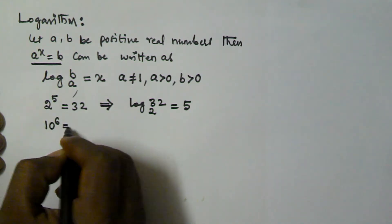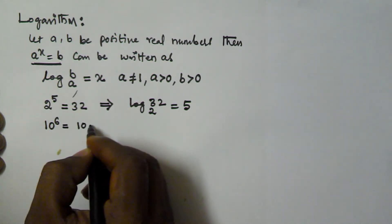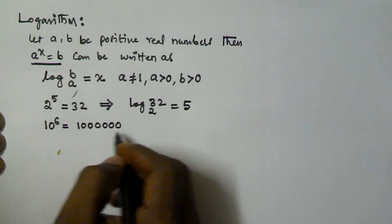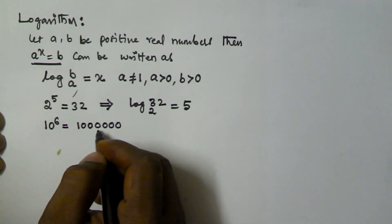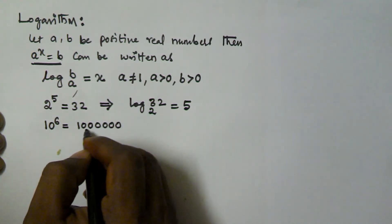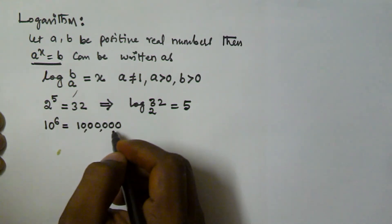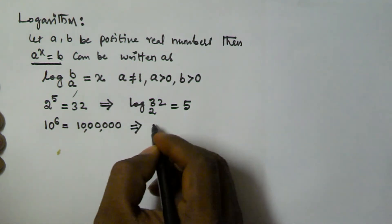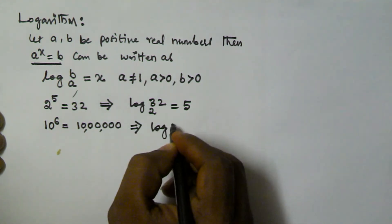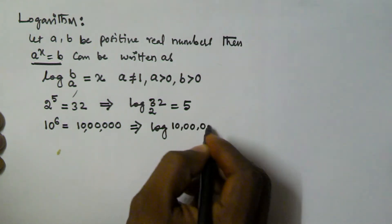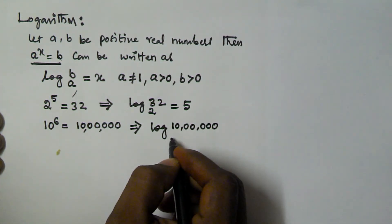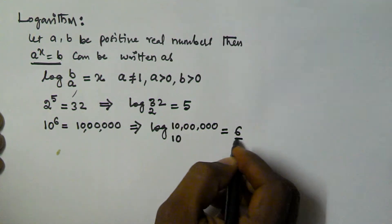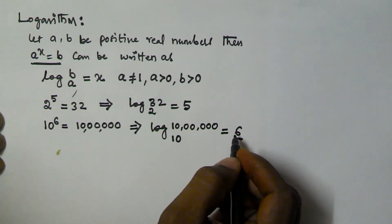For another example, 10 to the power of 6 is equal to 10 lakhs. So this can be written in logarithm form as log 10 lakhs base 10 is equal to 6.